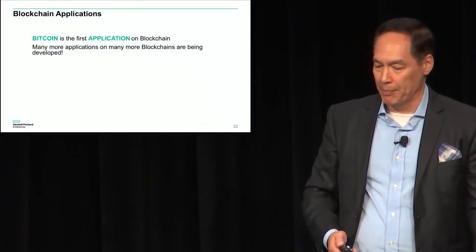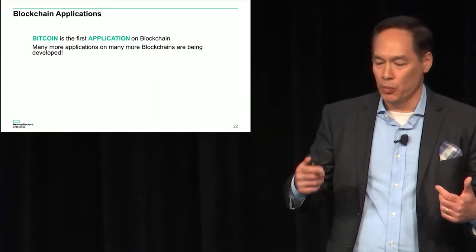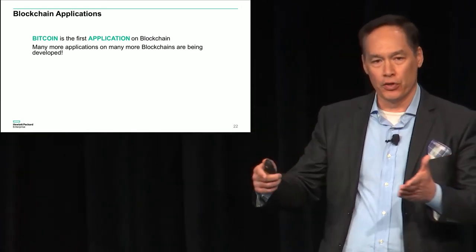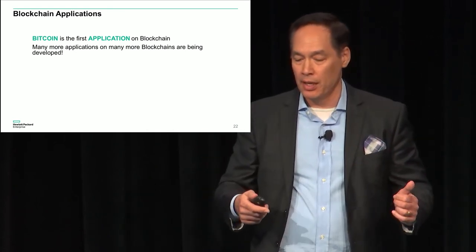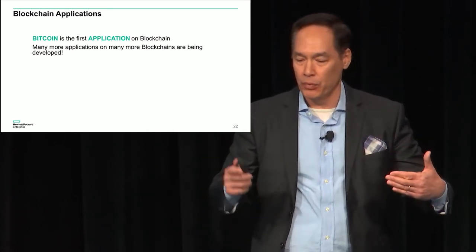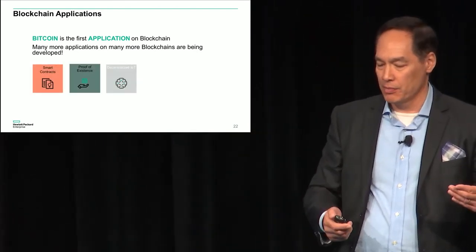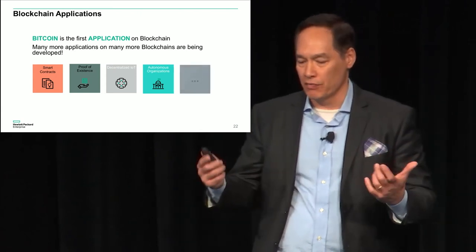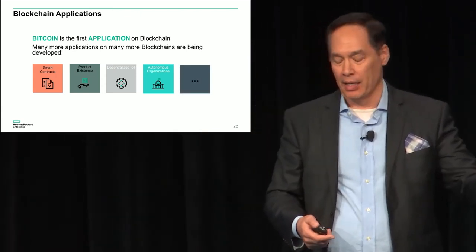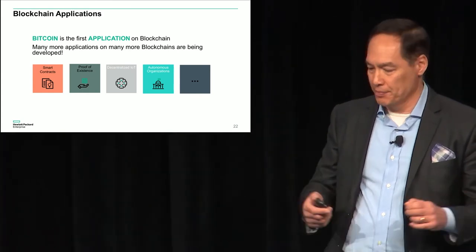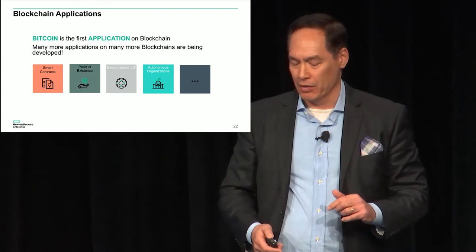The way to see blockchain is through its applications. Bitcoin was the first application — a cool way to transfer currency, but that's just the first step. We truly see blockchain as the basis of all of this. Smart contracts are the basis of all this technology. Proof of existence: you had the right to that IP. Decentralization and autonomous organizations — we'll get back and forth into that.